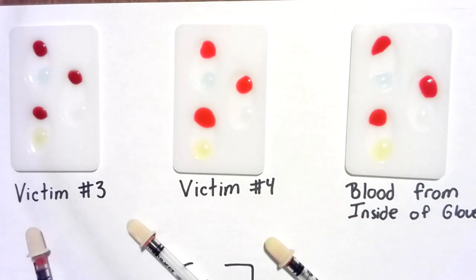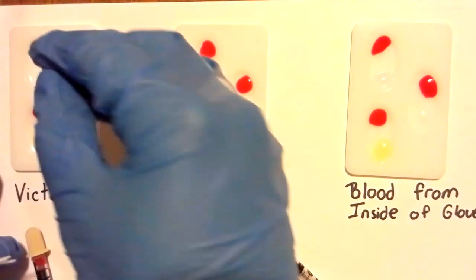We are now going to go ahead and use individual toothpicks to stir, and we will be looking for any type of clumping or gel-like reaction.